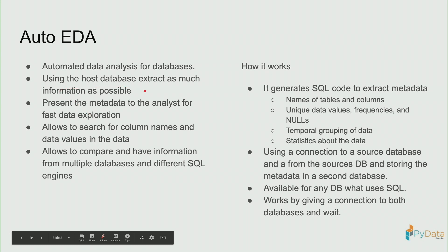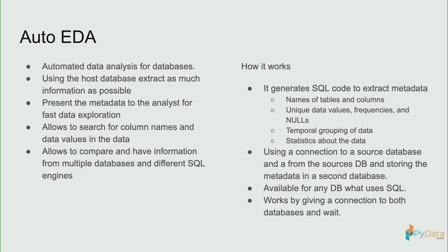Basically, you have two connections: a source database that you want to analyze — you can have as many as you want, just pile up the databases — and one metadata database where you put all the metadata from those tables. The library auto-generates SQL code and extracts column names, table names, features like distinct values, nulls in the dataset, temporal grouping of the data when you have timestamps, and some statistics.